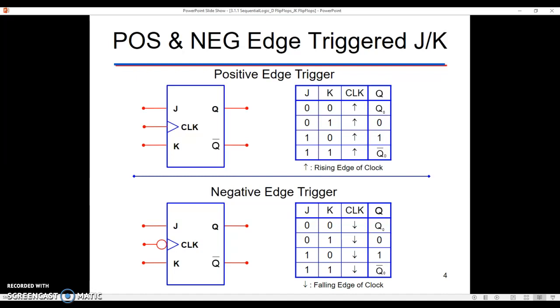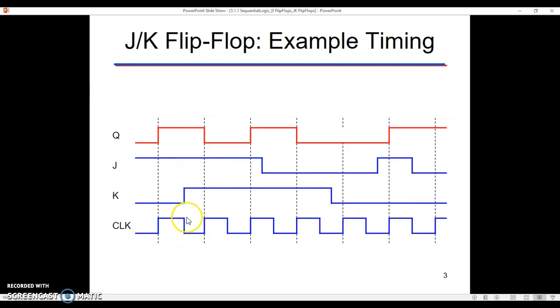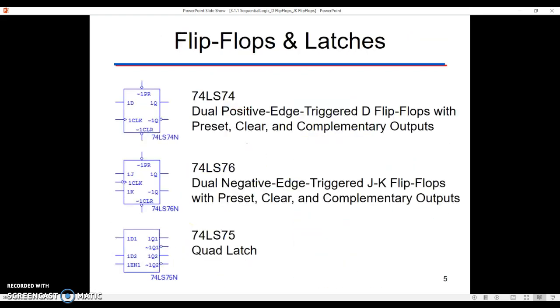Do note that we have positive and negative edge triggered JK flip-flops. In fact, I showed you positive on the previous slide in that timing diagram, but the one that was in multisim was a negative edge triggered. You're going to know because of the bubble that's next to the clock. The only difference between the two is we draw our dotted lines on the upside for positive edge triggered, and we would draw them on the downside for the negative edge triggered. That's the only difference between how they behave.